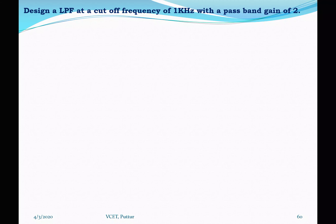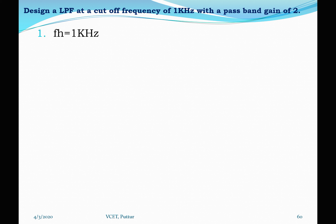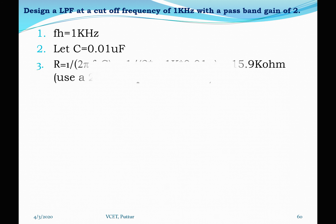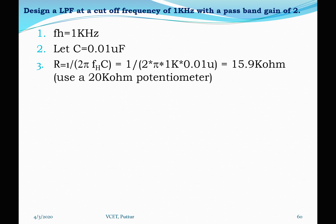We can now solve a related problem. We have to design a low pass filter at a cutoff frequency of 1 kHz with a passband gain of 2. That means FH is 1 kHz and AF is 2. First, we choose a standard capacitor value: C = 0.01 µF. Then we calculate the resistor: R = 1 / (2π × FH × C) = 1 / (2π × 1 kHz × 0.01 µF) = 15.9 kΩ.